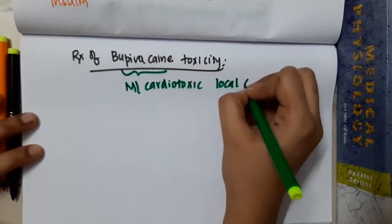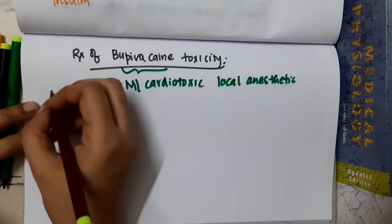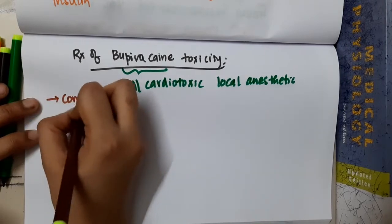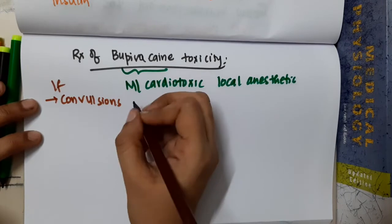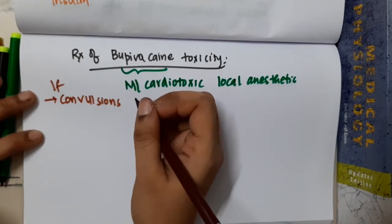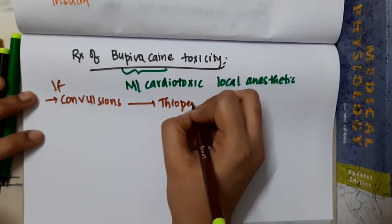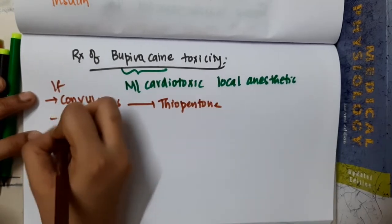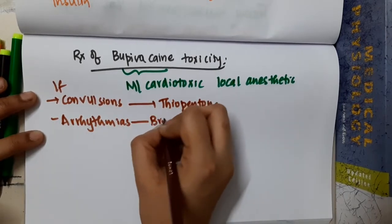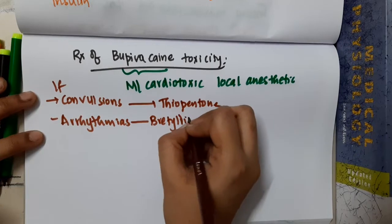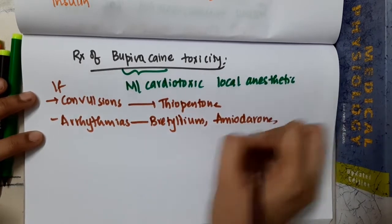If the patient has convulsions, thiopentone can be used. Then if the patient has arrhythmias, you can give anti-arrhythmics like bretylium, then amiodarone.